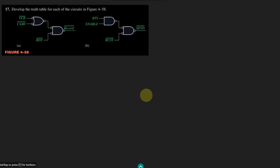This is question number 17 and today we are going to solve part B of it. Here we have this circuit in which the inputs are RTS, enable, and another input BG.